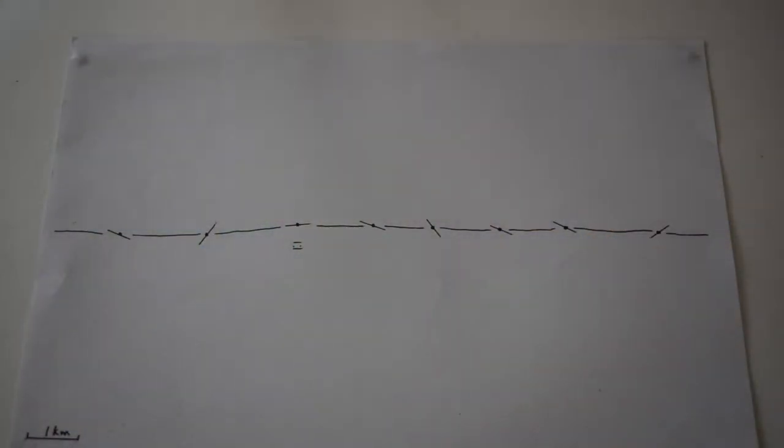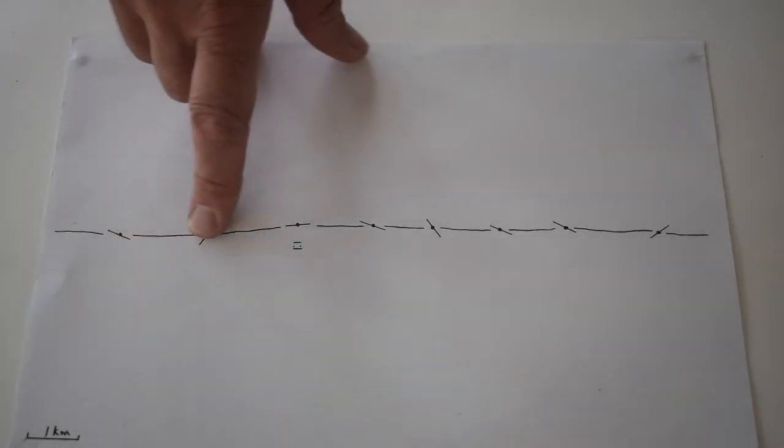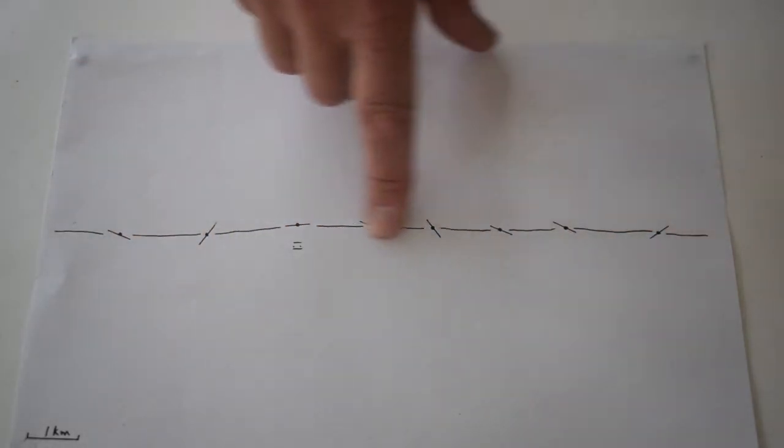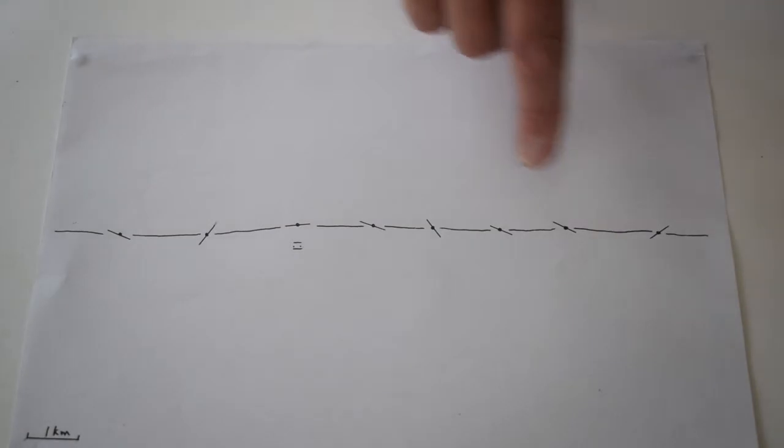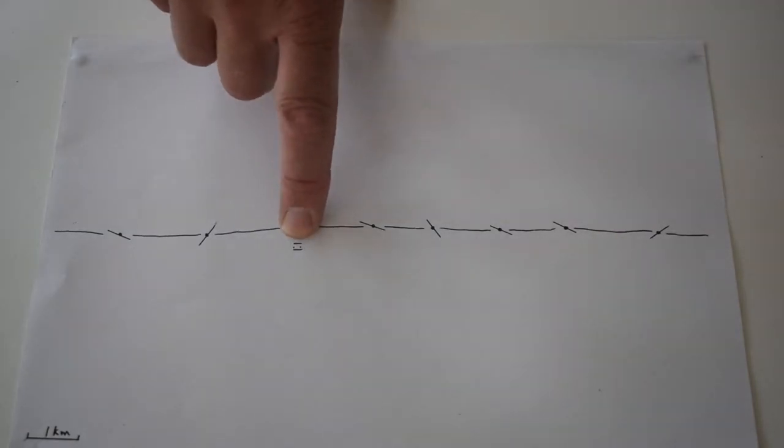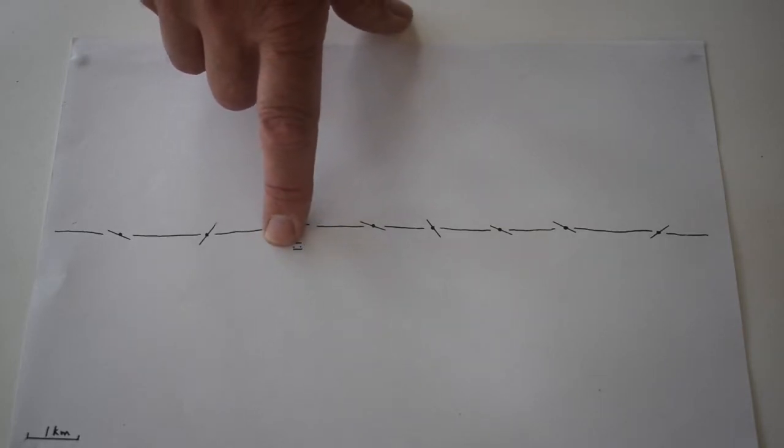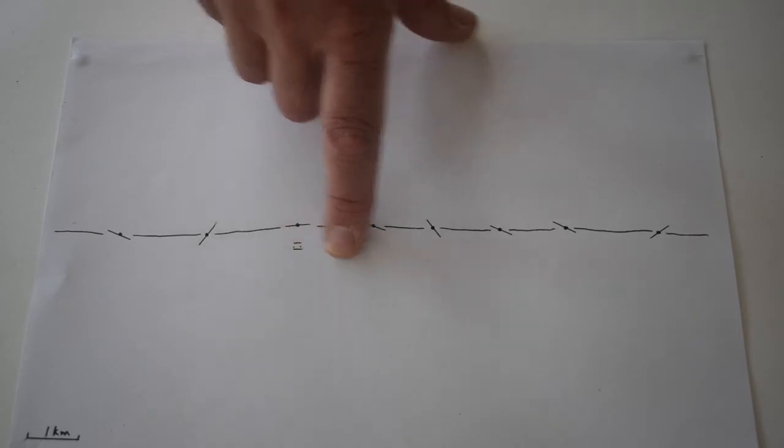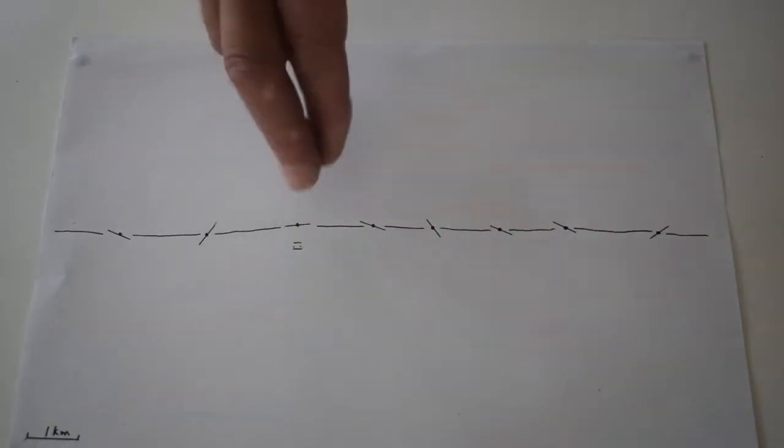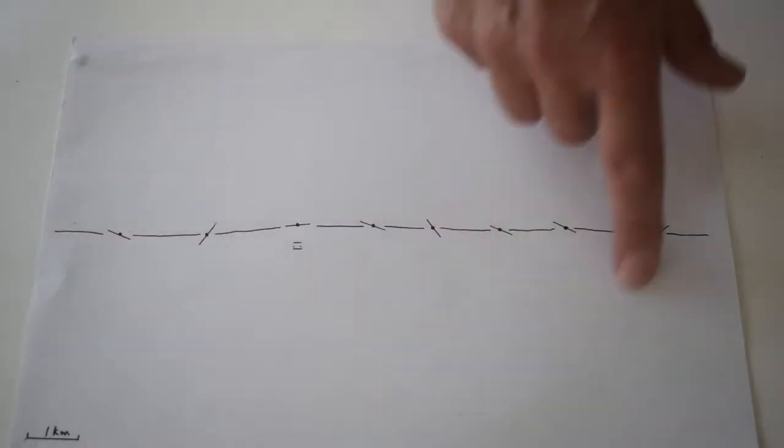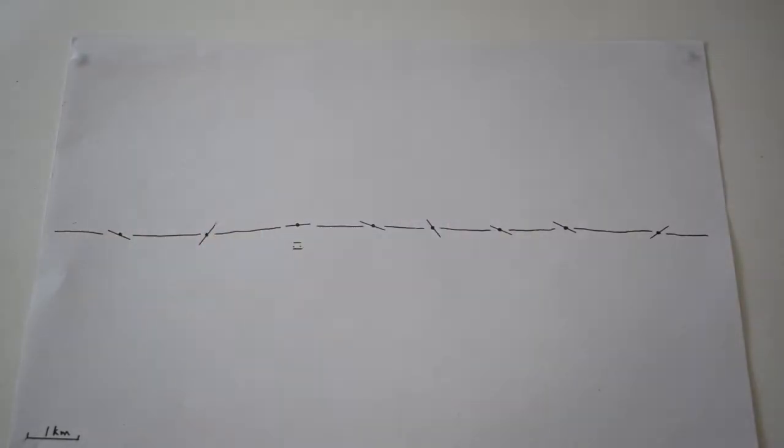So here's our profile that we're going to be constructing and it's got some bedding dips collected along an outcrop trace here, shown by that line. And in the subsurface, a unit with a top and a base, it's not very thick and our challenge is to try and draw the continuity of this layer into the subsurface and construct where it goes on the cross section.